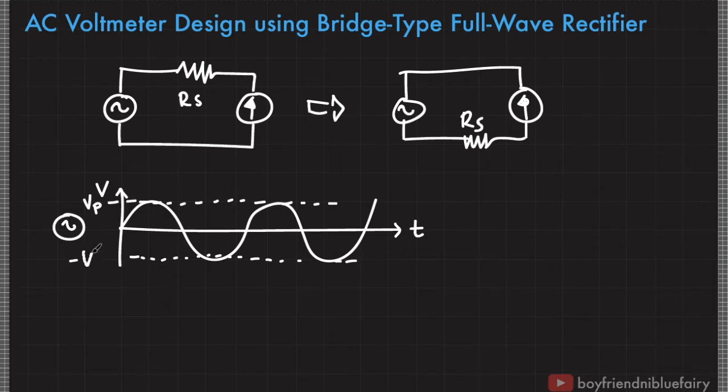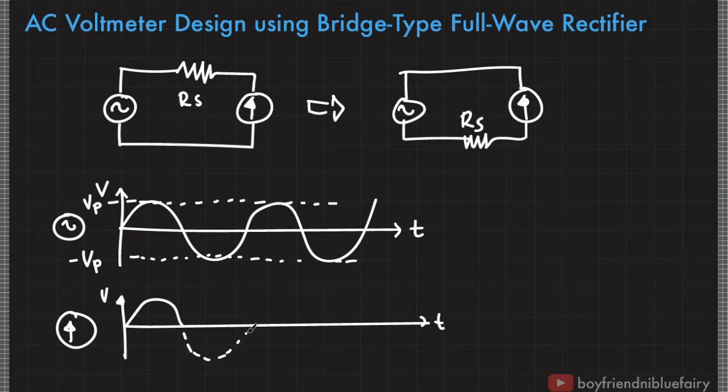Now I want to redesign my circuit or voltmeter in such a way that, if y-axis is the voltage level and x-axis is the time, during the first half cycle, the galvanometer will detect this portion. And instead of truncating this second half cycle, I'd like to record it as well.